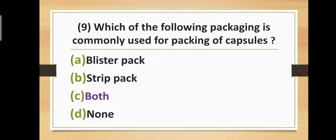Question number nine: Which of the following packaging is commonly used for packing of capsules? Option A: blister pack. Option B: strip pack. Option C: both blister and strip pack. Option D: none. The correct answer is option C — both blister pack and strip pack are used for the packaging of capsules.